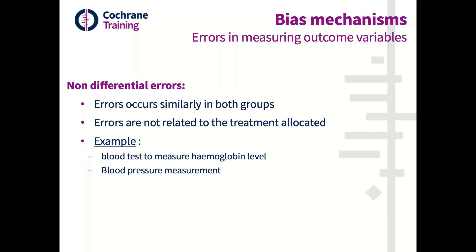Non-differential errors are errors that occur similarly in both groups — they are not related to the treatment allocated. For example, you measure hemoglobin level with a blood test, but the machine overestimates the hemoglobin level by one or two units — this happens in both groups. Similarly, a device used in the trial increases blood pressure readings by 10 mmHg, but again this happens in both groups.